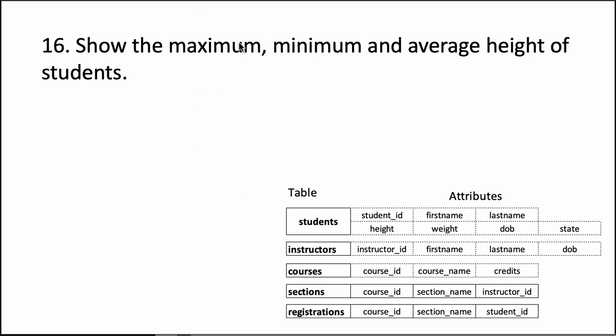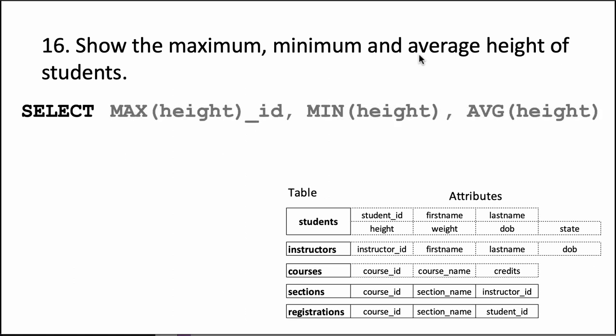This question is asking what is the maximum height among the students, minimum height among the students, and the average height among the students. Now we can have multiple aggregate functions within a single SELECT statement. So we can say SELECT maximum height, minimum height, average height from students.